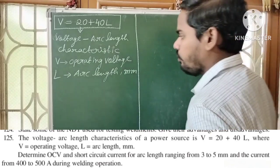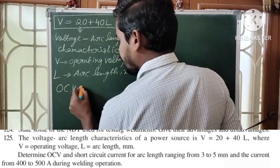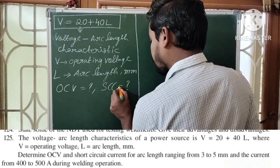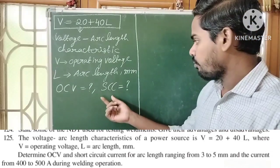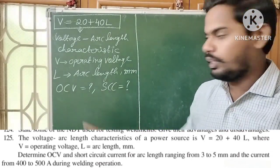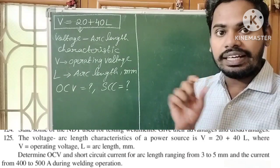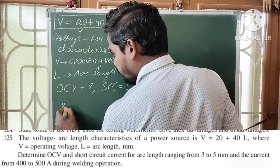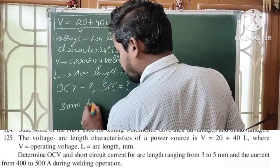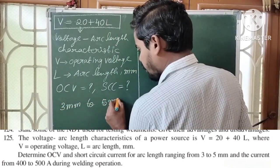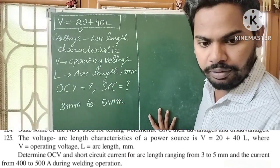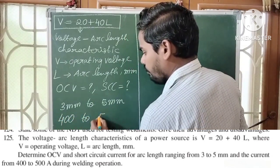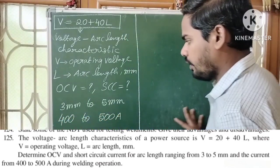We have to find open circuit voltage and short circuit current. The arc length varies from 3 mm to 5 mm, and the current varies from 400 to 500 amperes.